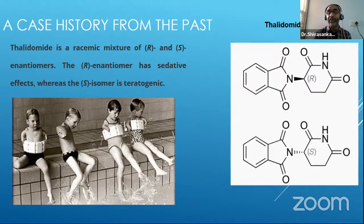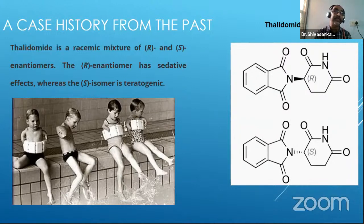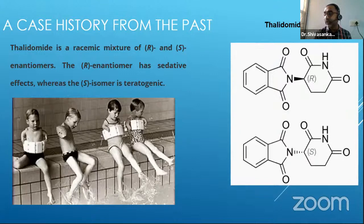The S-isomer stopped limb multiplication in small kids when it was administered to pregnant women. The kids were born with hand and leg disorders. This was one of the shocking incidents which took the pharma industry by storm in those days. So they came up with a resolution that whenever you make an isomer, when you test the R, you also need to test the S-isomer.